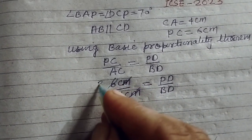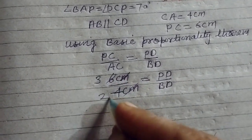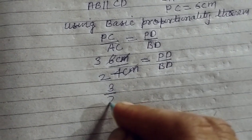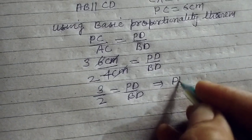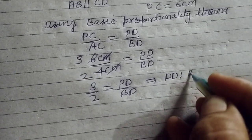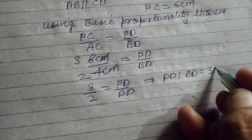So, 3 goes into 6 cm and 2 goes into 4 cm. So, 3 upon 2 is equal to PD over BD. It means PD ratio BD equals 3 ratio 2.